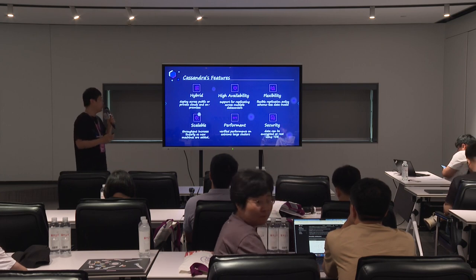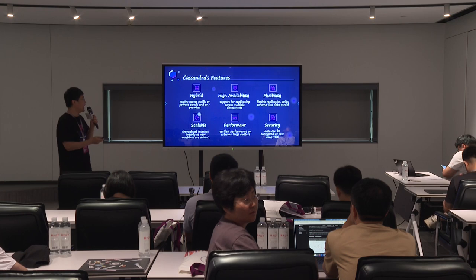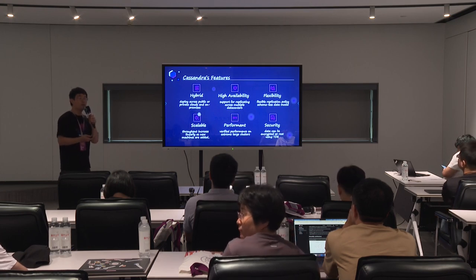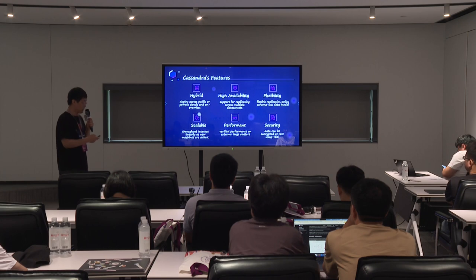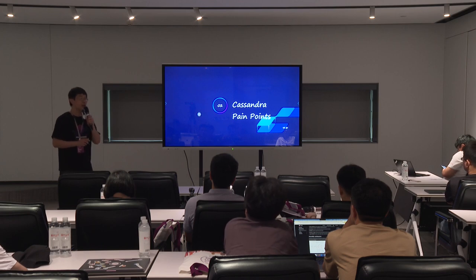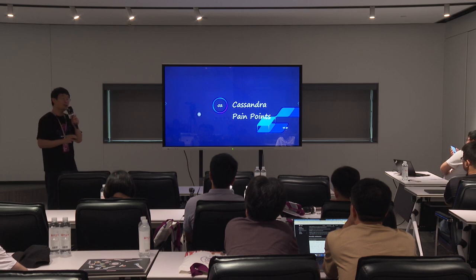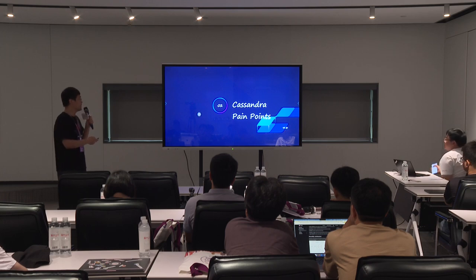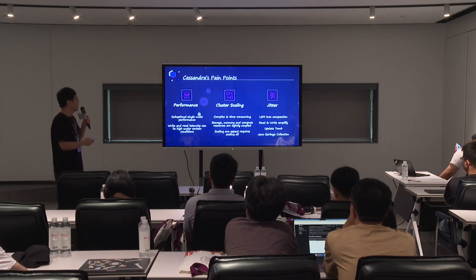The next feature is performance. The performance of Cassandra on a very large cluster is verified. Many companies use very big Cassandra clusters with thousands of nodes. And the next one is security. Because Cassandra is very mature, its data can be encrypted at rest. For example, you can use TDE and so on. But Cassandra also has some pain points. I think this is not just for Apache Cassandra — many key-value databases based on LSM tree also have these issues.